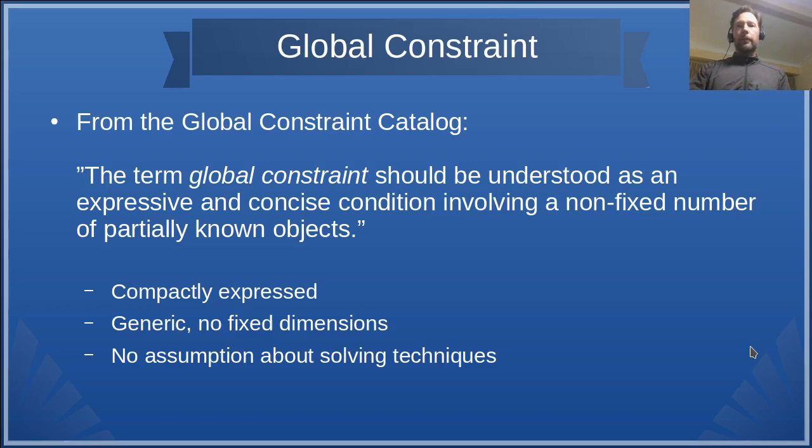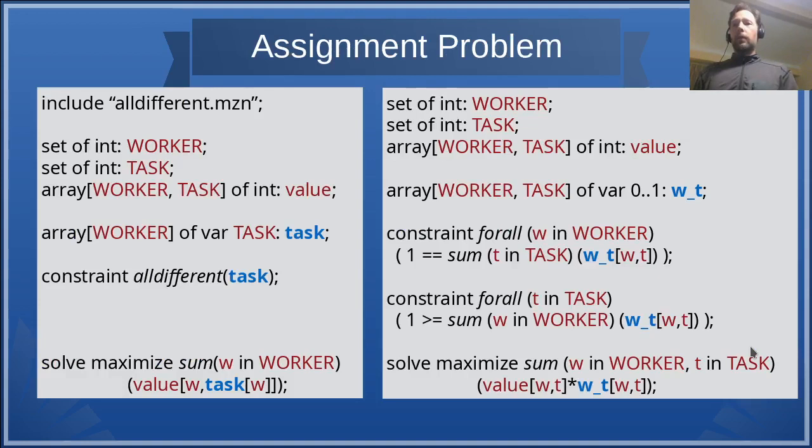Example: Assignment problem. We have a set of workers and set of tasks. Each worker needs one task, and each task can be assigned to at most one worker.